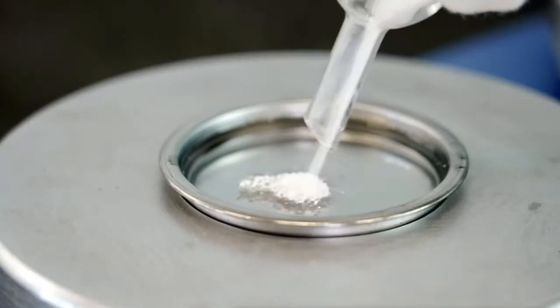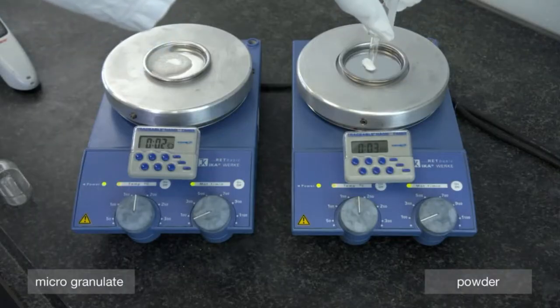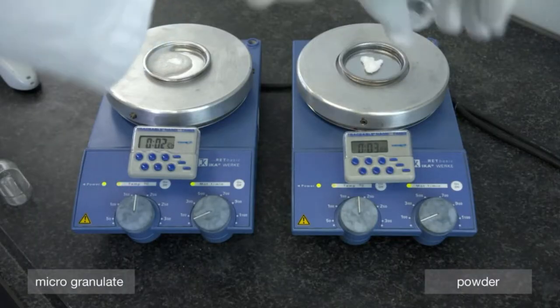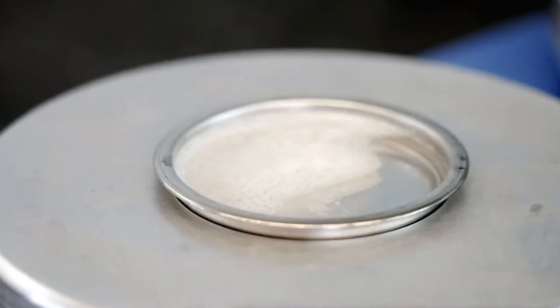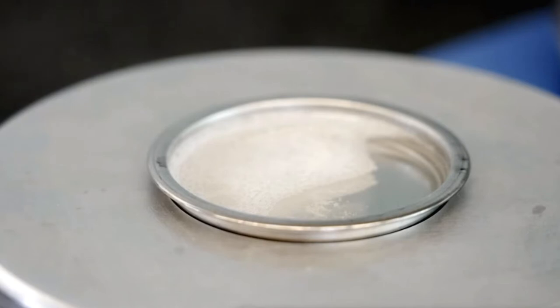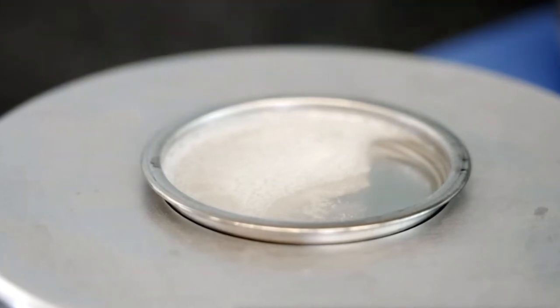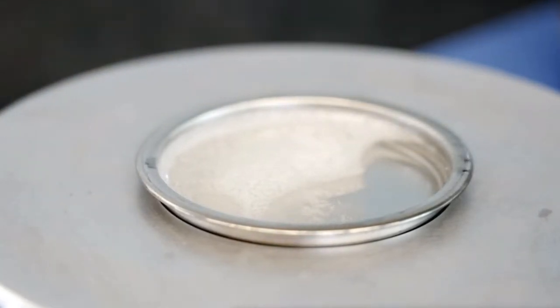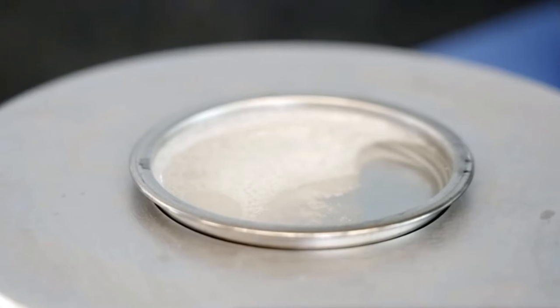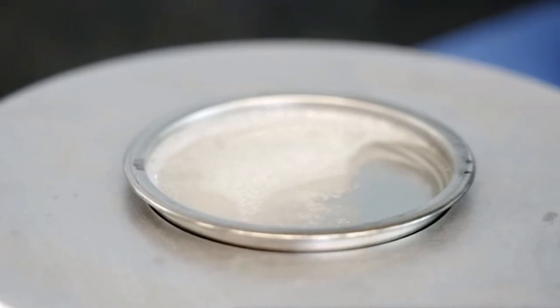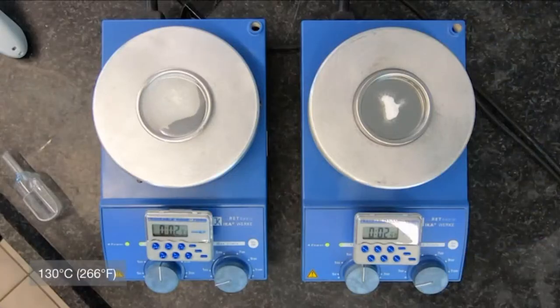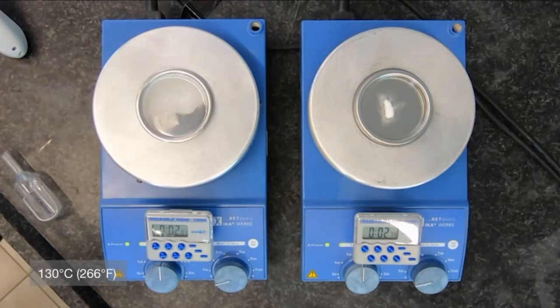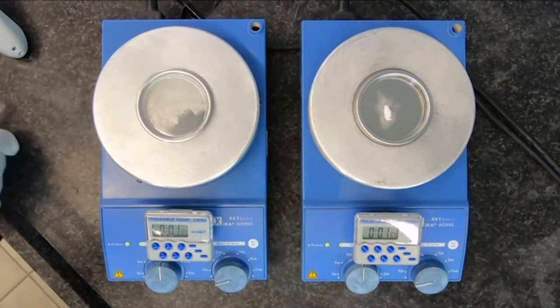The new microgranular product form has the advantages of a granular form combined with the fine distribution of a powder form, which simplifies melting it into a polymer melt. The microgranulate dissolves even faster since the air entrapments act as a dissolving promoter. This significantly reduces stirring times to up to 10% of the original homogenization time.